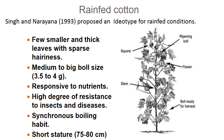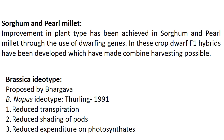In sorghum and pearl millet, improvement in plant type has been achieved through use of dwarfing genes; dwarf F1 hybrids have been developed making combined harvesting possible. For brassica, the model was proposed by Bhargava. The idiotype for brassica involves comparatively moderate height with fewer leaves, because more leaves may cause reduced pod yield — so fewer leaves are needed to increase harvest index.